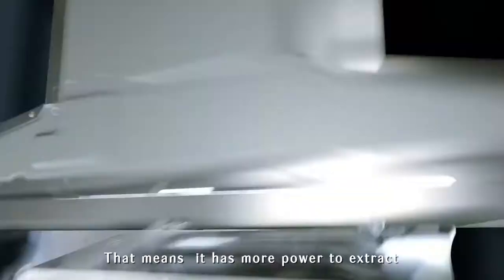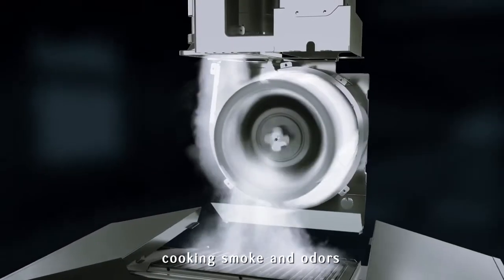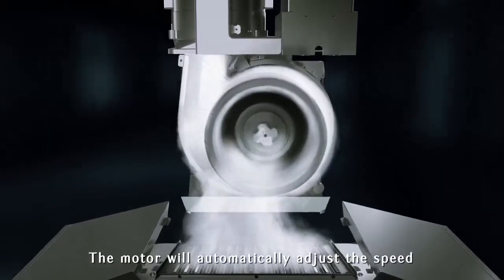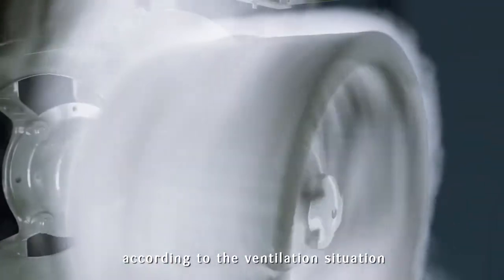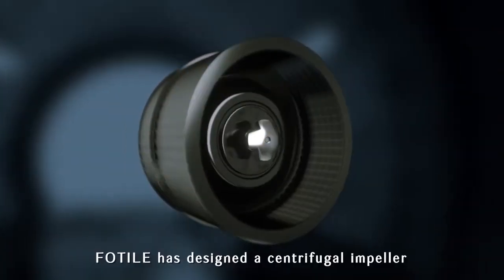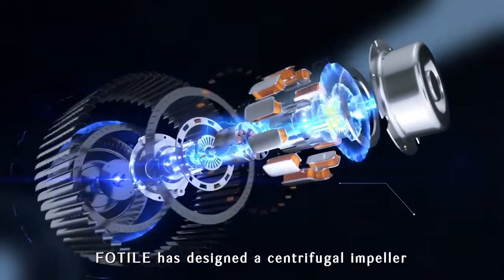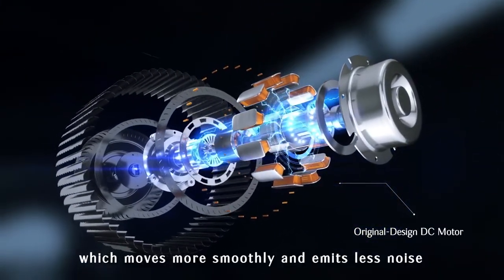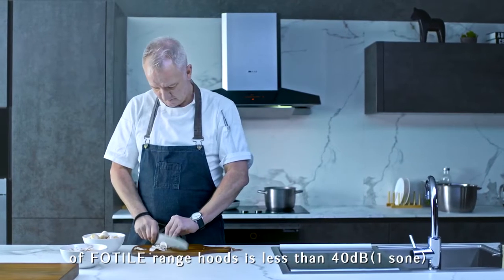That means it has more power to extract cooking smoke and odors. The motor will automatically adjust the speed according to the ventilation situation. Combined with a DC motor, Fotile has designed a centrifugal impeller, which moves more smoothly and emits less noise, less than 40 decibels.